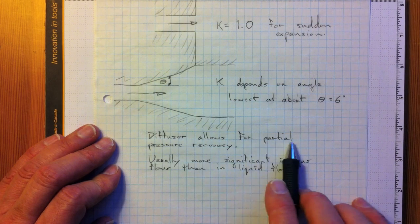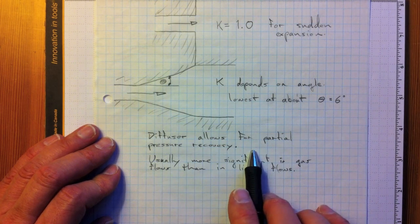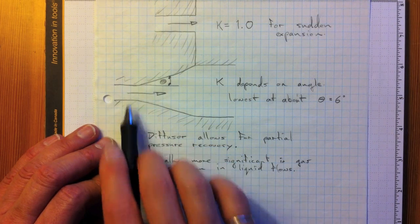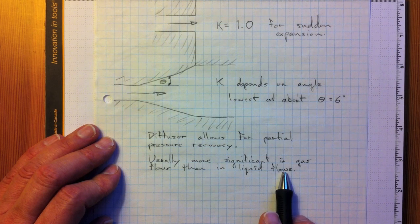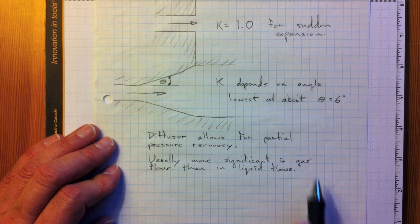So this diffuser allows for partial pressure recovery. And this can be a significant energy recovery if we have a large amount of kinetic energy in this pipe flow. It's usually more significant in gas flows than in liquid flows. For instance, air flows in ducts that you'd find in a heating and ventilating system.